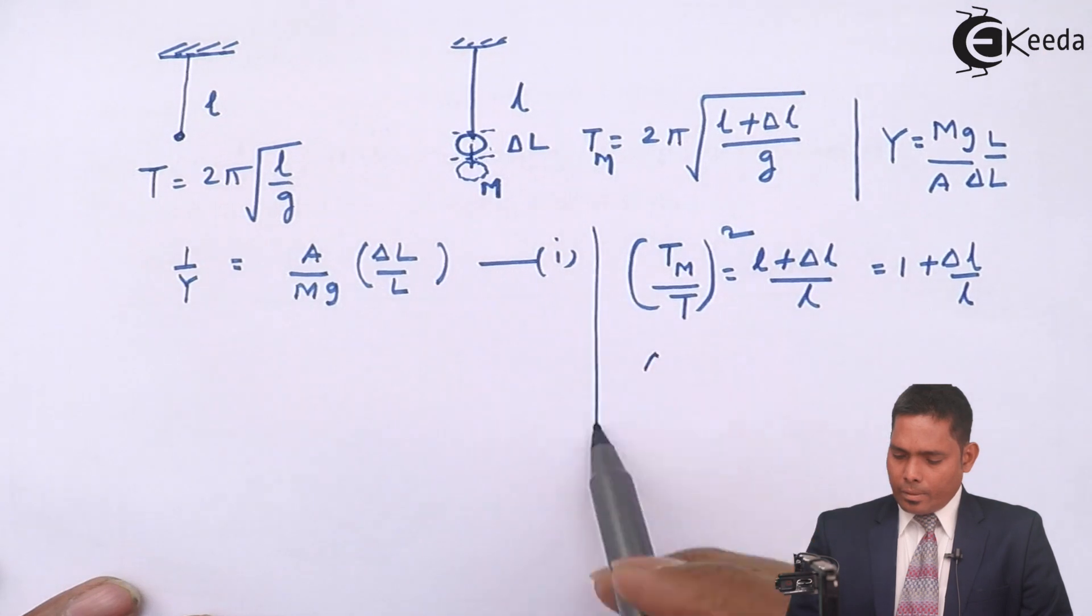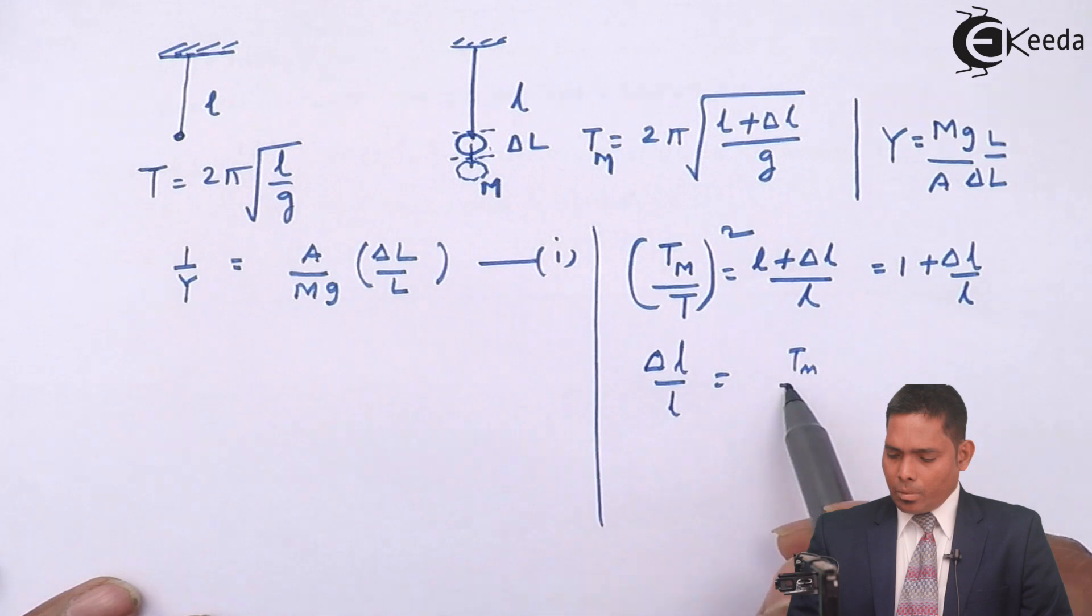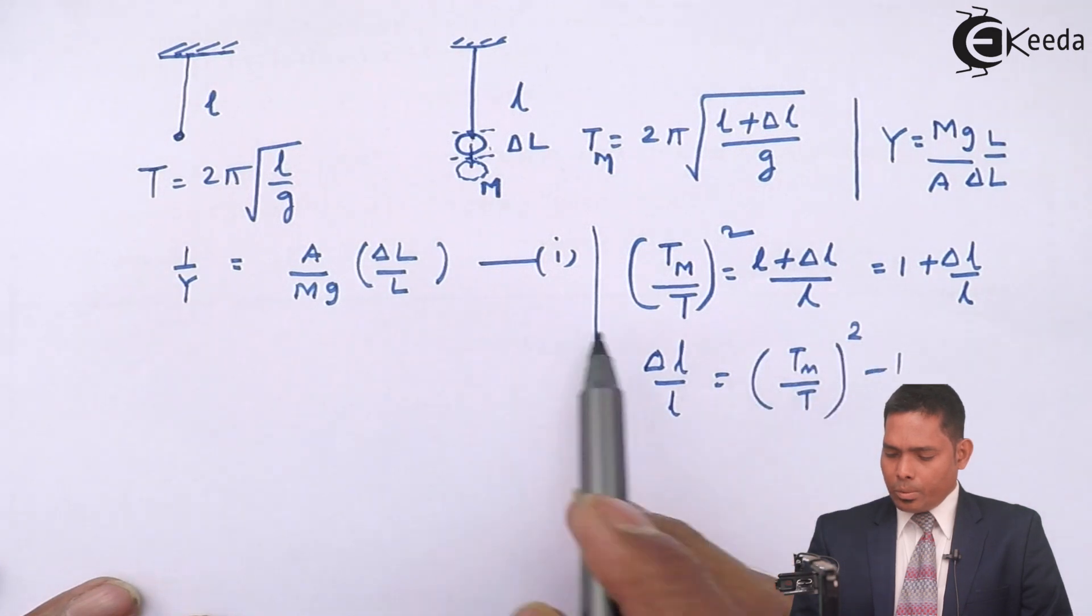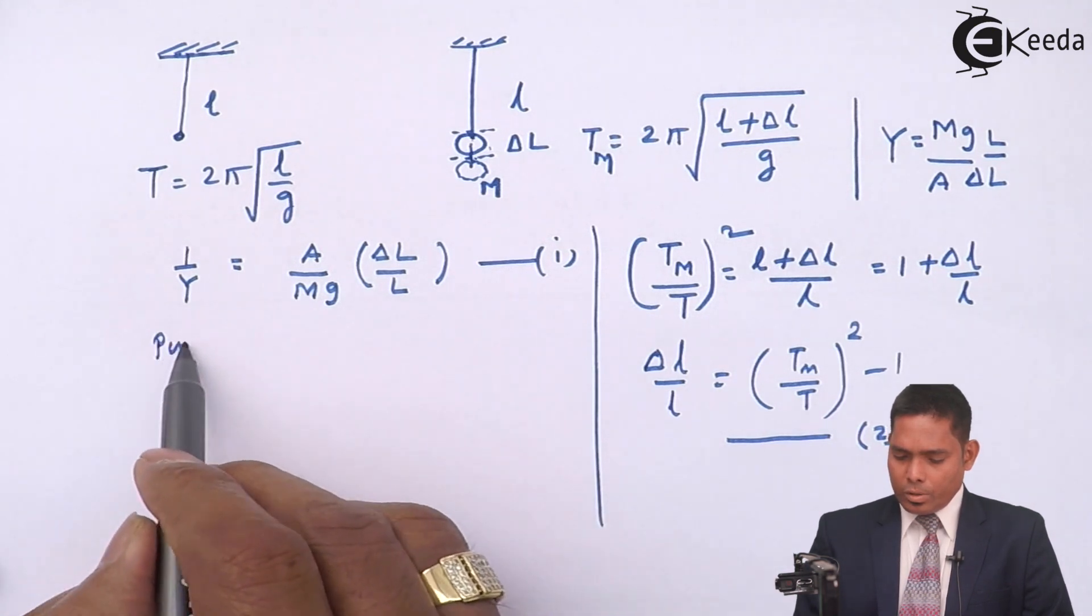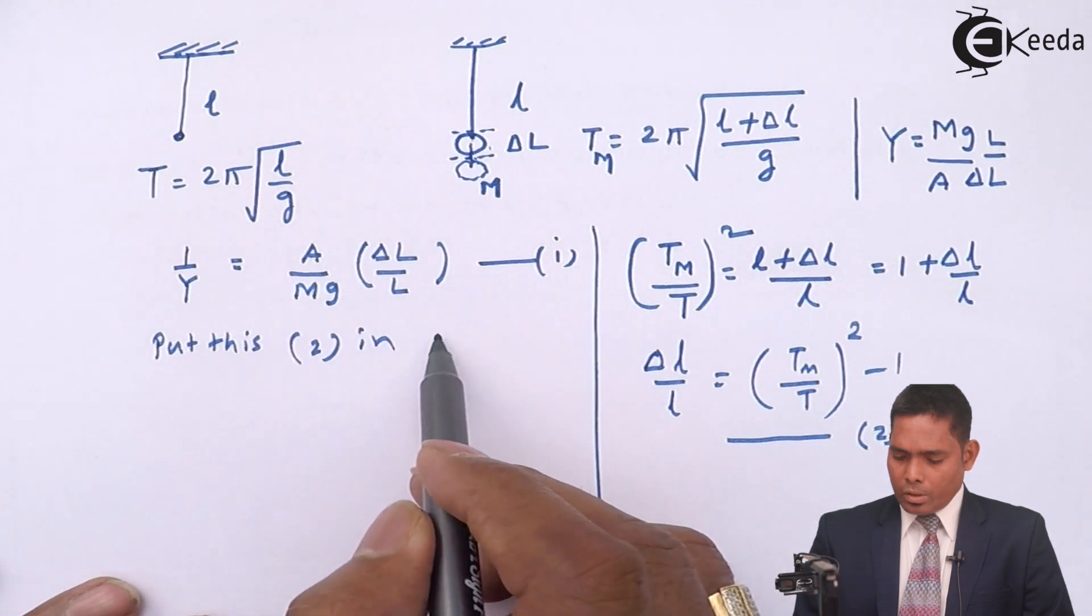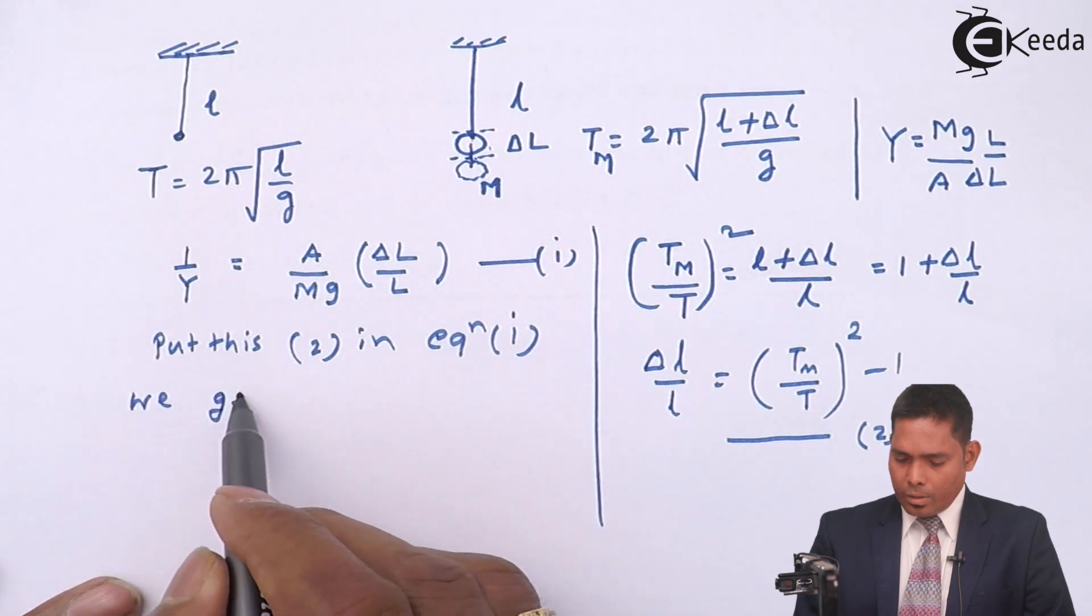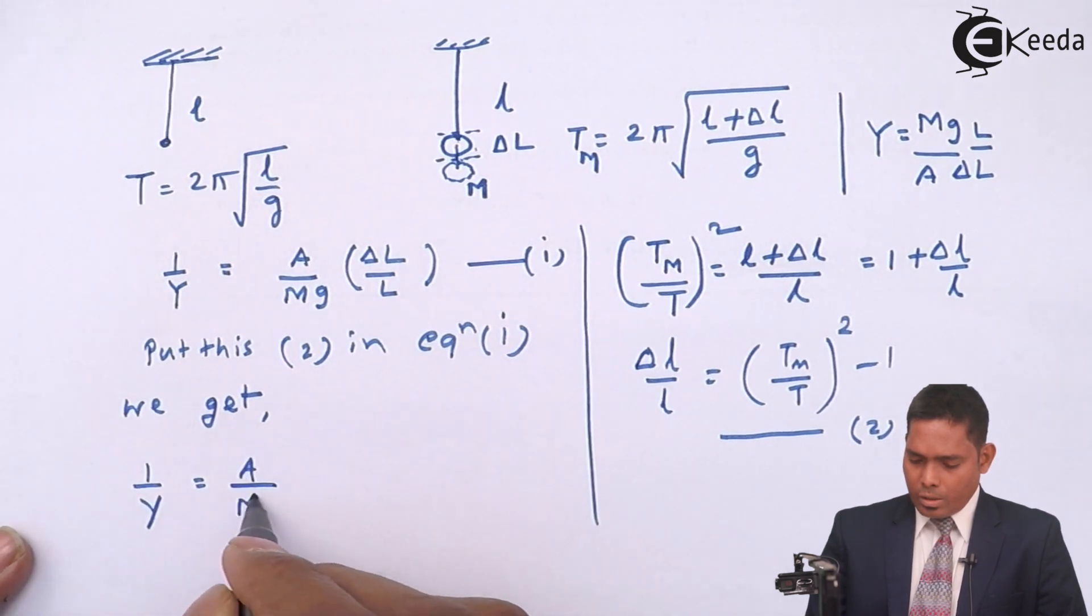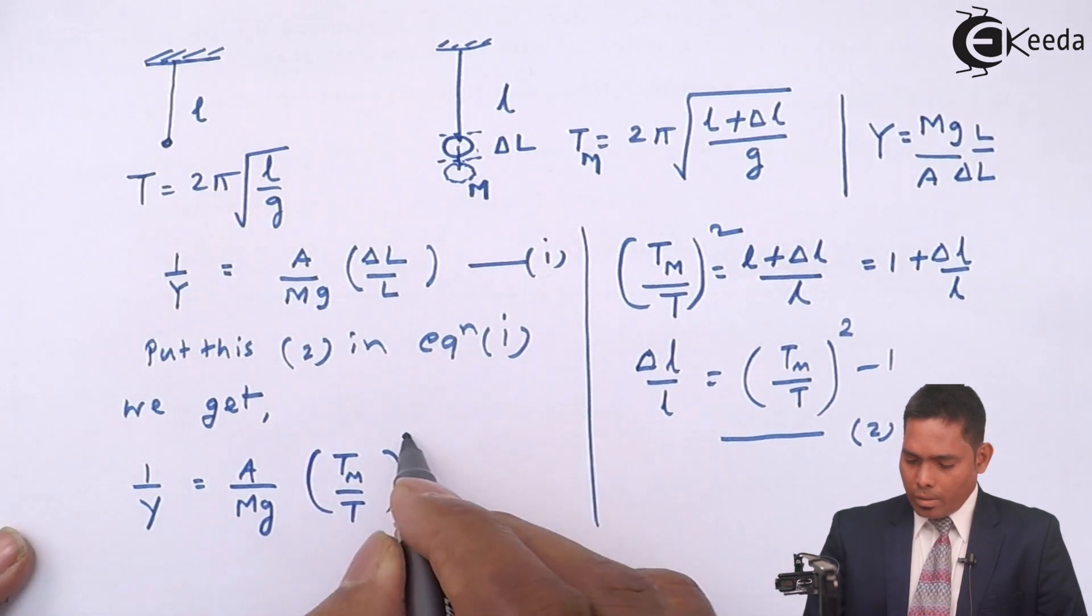So from here, delta L over L equals to Tm over T the whole square minus one. So this value is put here in equation one. Put equation two in equation one, we get 1 by Y is A over Mg, Tm upon T the whole square minus one.